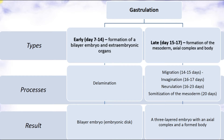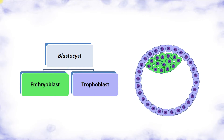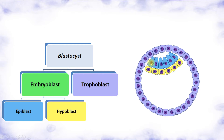Let's begin with early gastrulation. We already know that the blastocyst stage of embryonic development has an embryoblast and a trophoblast. The trophoblast provides nutrition and feeding of the embryo and will form the chorion and placenta. The embryoblast will form the embryo — only these cells will participate in the formation of the embryo.